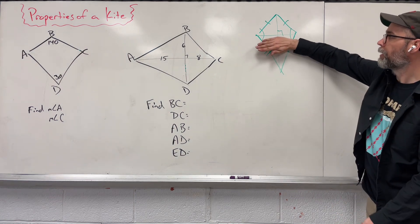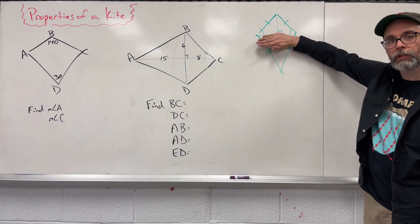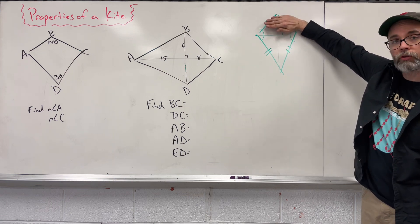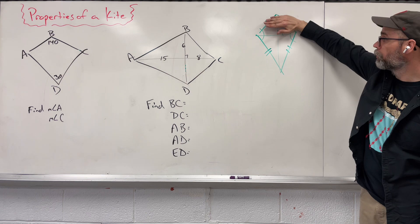So if we were to look at the top half of this, I have two small little triangles up there. Those two triangles are congruent to each other. Bottom half, I've got two more triangles. Those two triangles are congruent to each other.